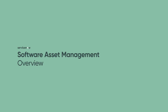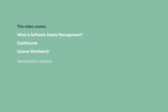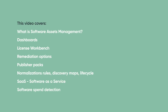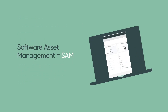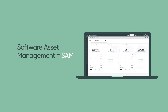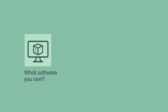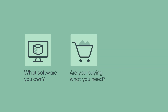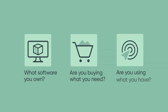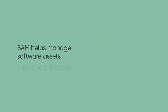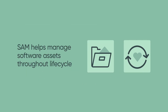This video provides an overview of Software Asset Management and Software Asset Management Professional. You can skip to any of these topics from the YouTube description. SAM Pro provides visibility and control of software licenses throughout their lifecycle. With SAM Pro, it's important to know what software you own, are you buying what you need, and are you using what you have. SAM Pro helps answer these questions so software assets can be efficiently managed throughout their lifecycle.